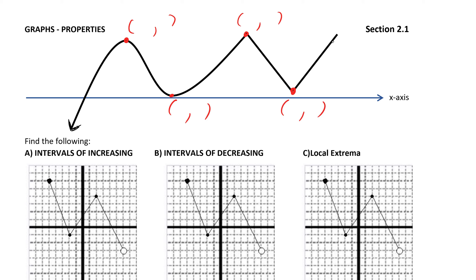I'm just going to make some values up. So this is negative 5 and that's 10. This would then be 0 and it's still above, so 1. And then this would be 5 and 11. And then this would be 10 and 2. So you have an x value and a y value here as you move through these graphs.